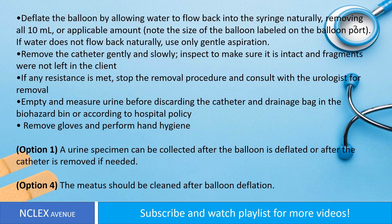If any resistance is met, stop the removal procedure and consult with the urologist for removal. Empty and measure urine before discarding the catheter and drainage bag in the biohazard bin or according to hospital policy. Remove gloves and perform hand hygiene. Option 1: A urine specimen can be collected after the balloon is deflated or after the catheter is removed if needed. Option 4: The meatus should be cleaned after balloon deflation.